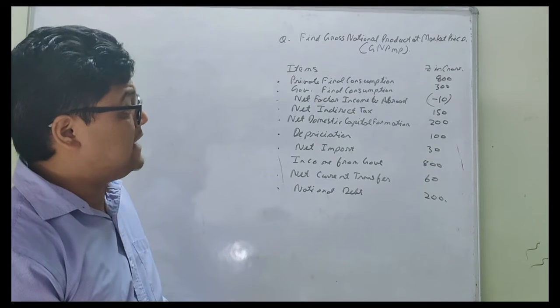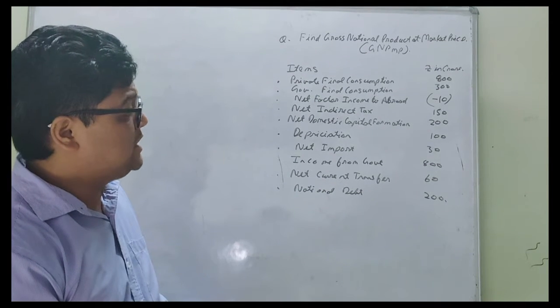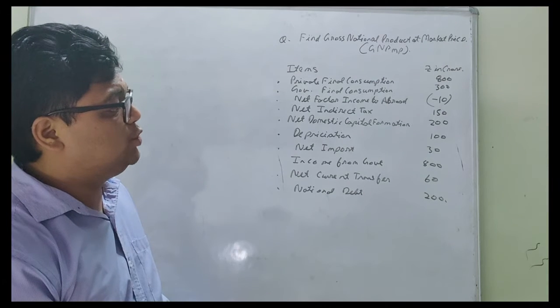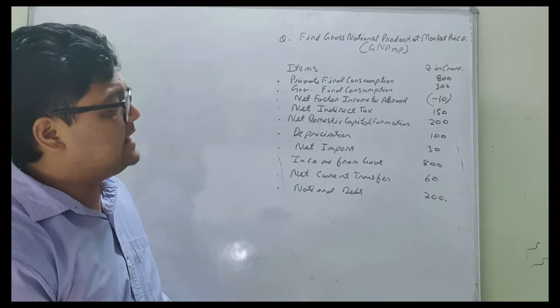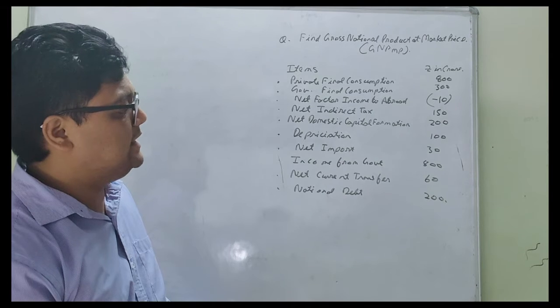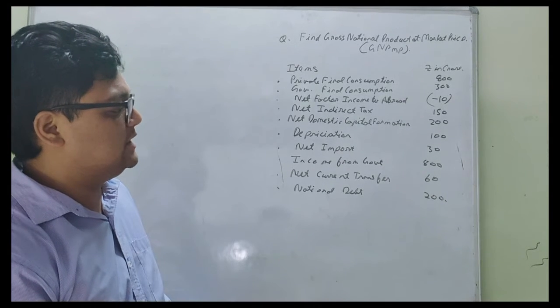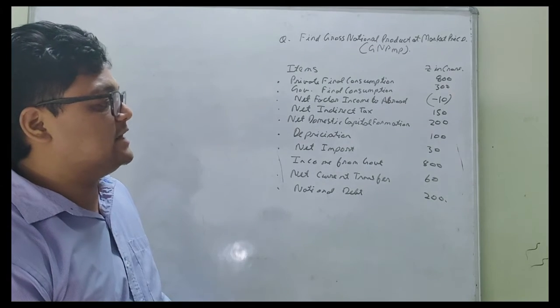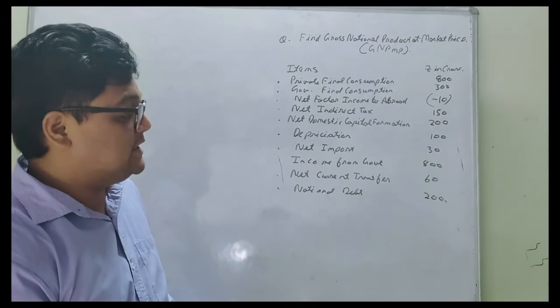Items is given: private final consumption 800, government final consumption 300, net capital income to abroad minus 10, net indirect tax 150, net domestic capital formation 200, depreciation 100, net import 30, income from government 800, net current transfer 60 and national debt 200.